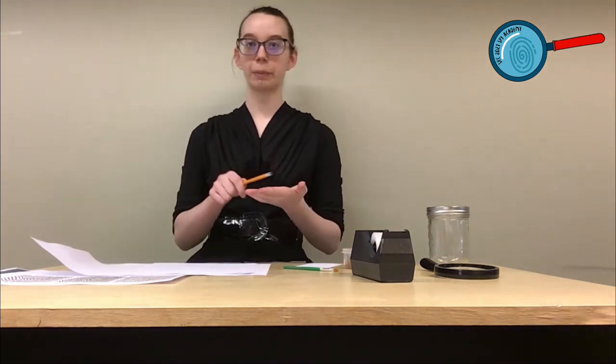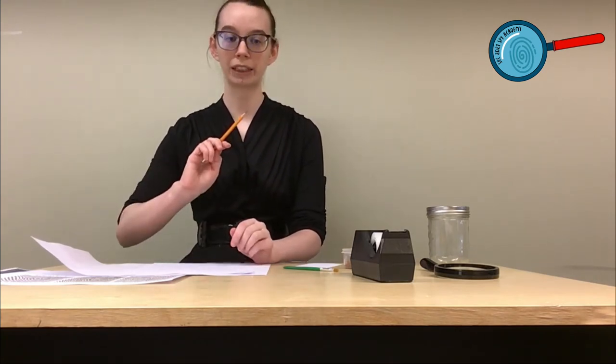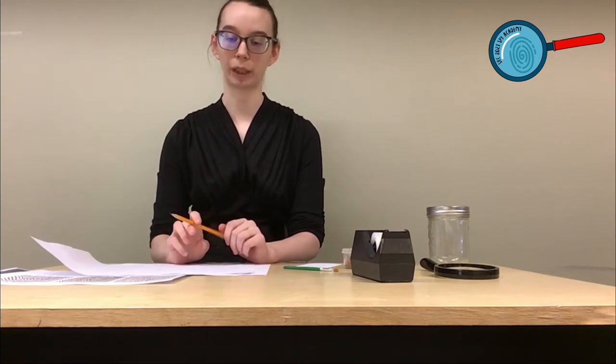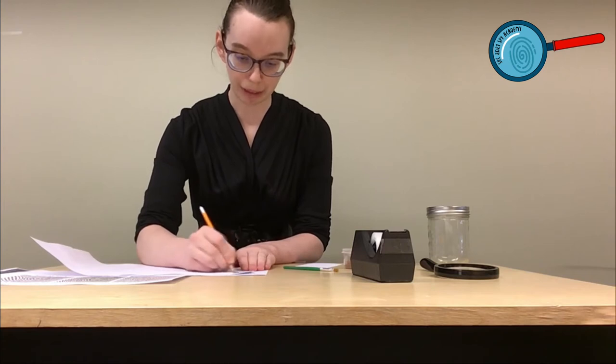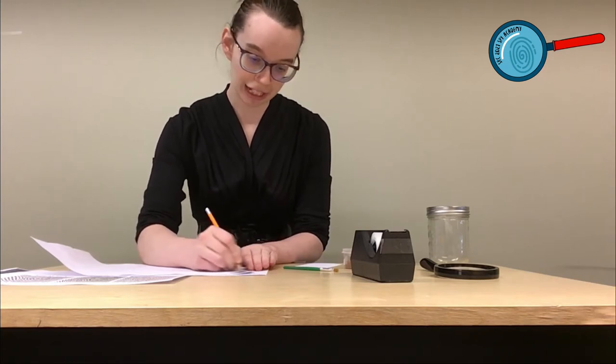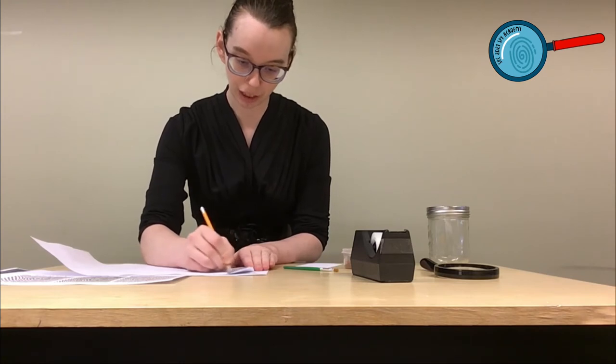Now that we've done that, we need some way to get the fingerprints from our fingers off so that we can label them. To do that, we're going to create our own ink pad. We're going to use our pencil, but if you have ink, you can use that as well. You're going to color very hard on one of your sheets of paper. This is going to create an ink pad that we can then rub our fingertips into to lift prints off of our fingers.